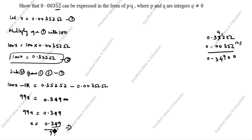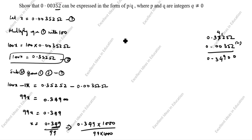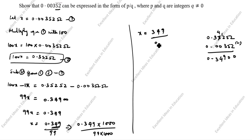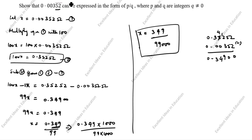x is equal to 0.349 divided by 99. How do we write this? There are 3 digits after the decimal point, so we multiply numerator and denominator by 1000: x equals 349 divided by 99,000. This is the answer. You have to divide this one. Thanks for watching this video.